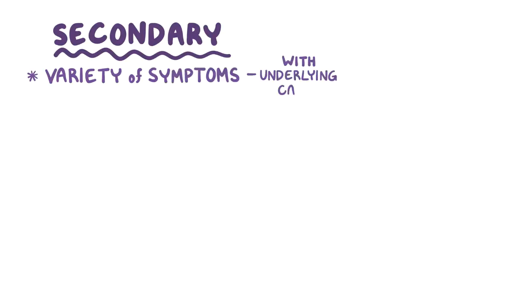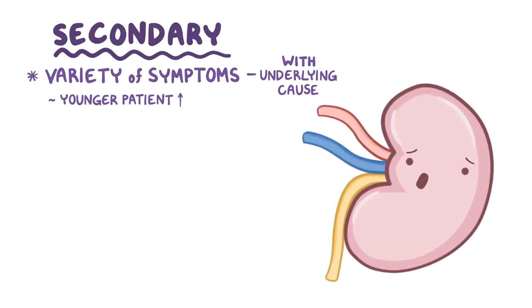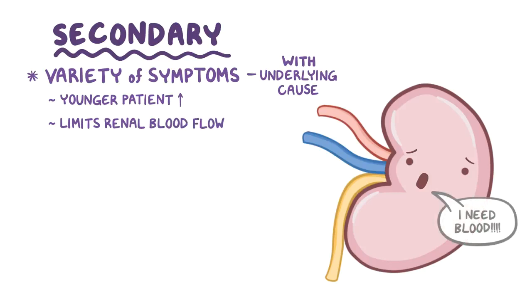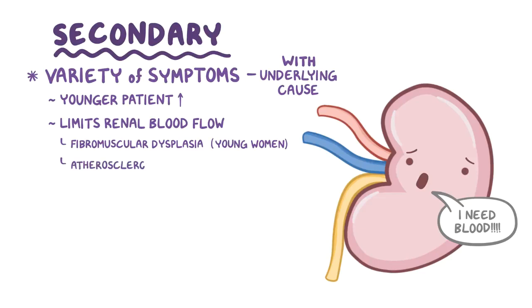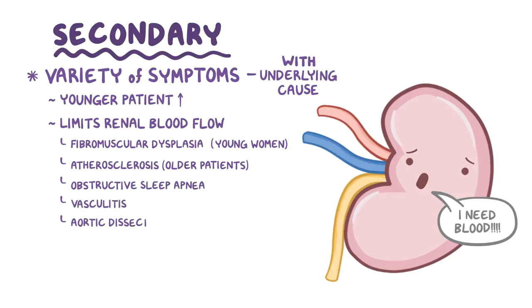Secondary hypertension often is accompanied by a variety of symptoms associated with the underlying cause. In general, the younger the patient, the more likely it's secondary hypertension. For example, anything that limits renal blood flow can cause hypertension, like fibromuscular dysplasia, which generally affects young women, but also atherosclerosis in older patients. Other examples include obstructive sleep apnea, vasculitis, aortic dissection, as well as pheochromocytoma, Cushing's syndrome, and other endocrine disorders.